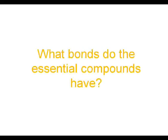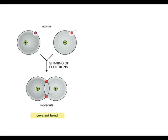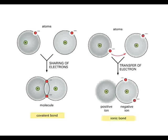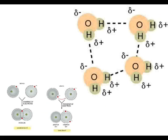What bonds do the essential compounds have? Covalent bonds, which is the sharing of electrons between two elements. They also have ionic bonds, which is the transfer of electrons between two elements. And lastly, there are hydrogen bonds — strong intermolecular forces of attraction between hydrogen atoms and highly electronegative elements, such as oxygen.